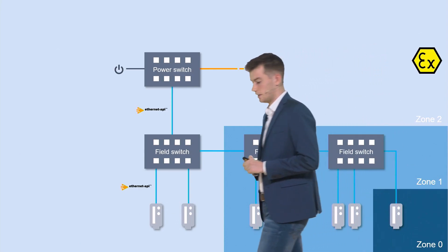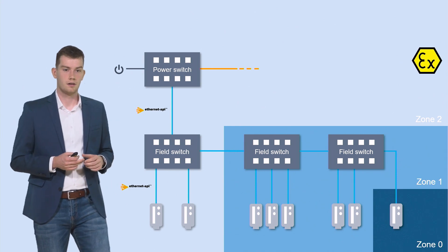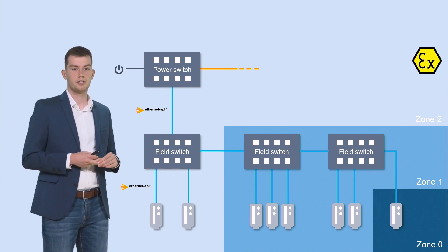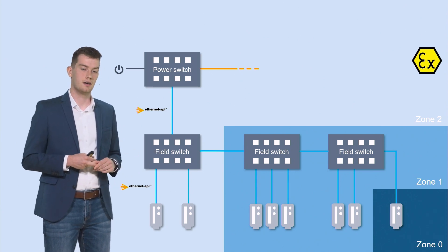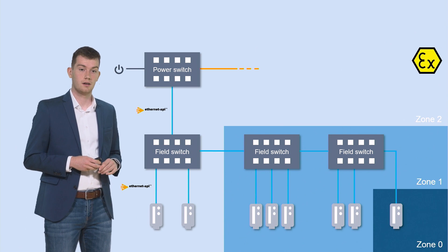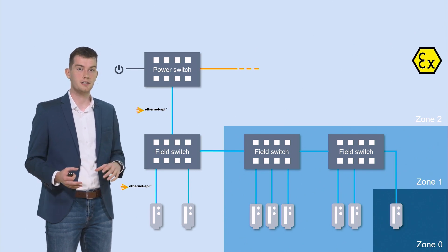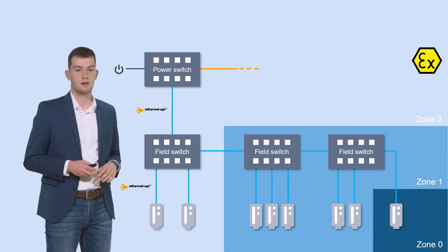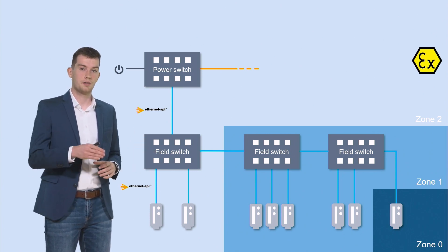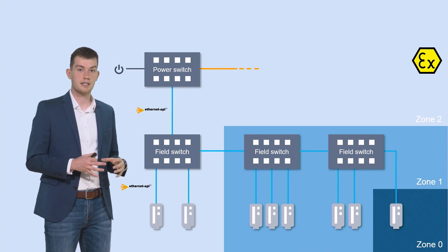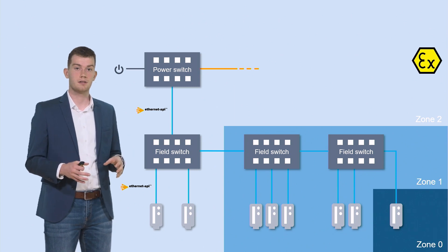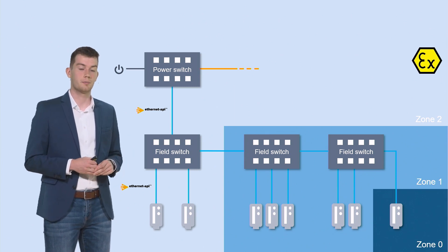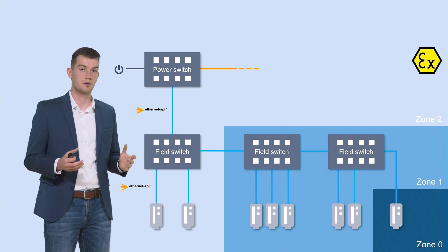Let's take a look at the typical Ethernet APL architecture. We have a power switch, which is designed to combine the external power feeding and the standard Ethernet network of your process plant. Under that, we have the field switches, which are designed to connect all the field devices into the higher-level systems. With the field devices and the Ethernet APL communication standard, we can integrate all of our products and field devices up into Zone 0 of the hazardous areas.